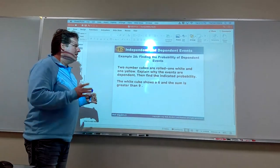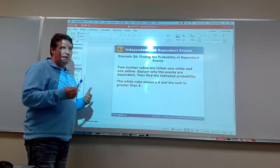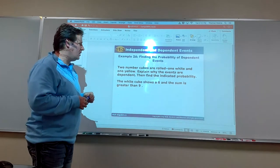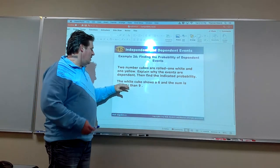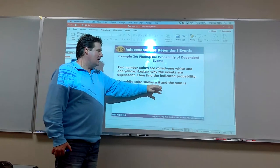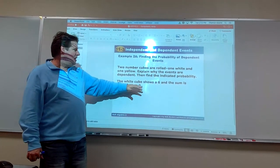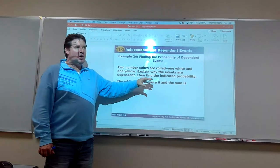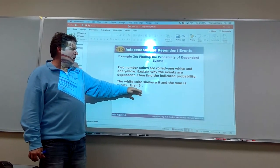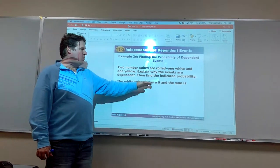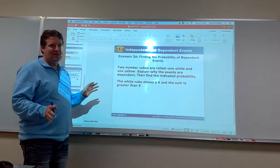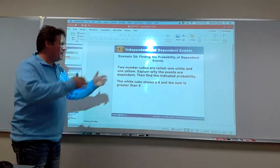So here's a case here. Two number cubes are rolled, one white and one yellow. I'm guessing that, you know, assuming that we're 1 through 6 like we normally are. Why are they dependent? Now the white cube shows a 6, and the sum is greater than 9. So here's why it's dependent, because if the white cube is a 6, that increases the chances of our sum being greater than 9. If the white cube showed a 1, we'd have zero chance of getting a sum of 9.